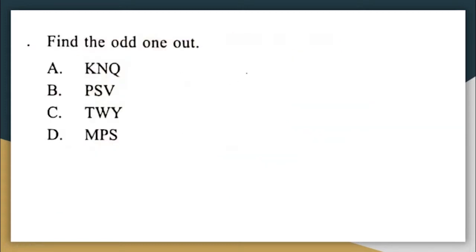Find the odd one out. K, N, Q / P, S, V / T, W, Y / M, P, S. Let us try to find the odd one out. K, N, Q — after K, they have missed out L and M, and then written N. That is plus 3. K plus 3 is N. Similarly, after N they have missed out O and P and written Q — plus 3 again.